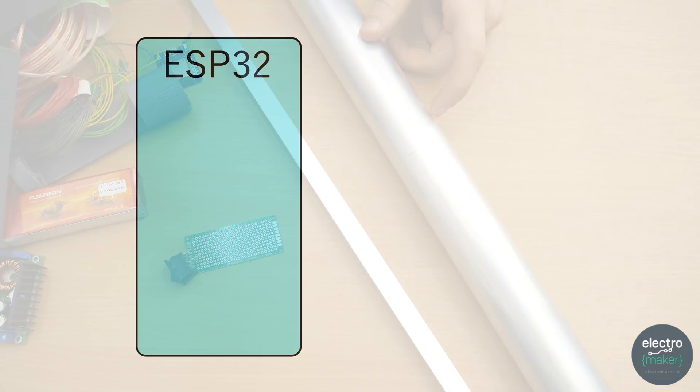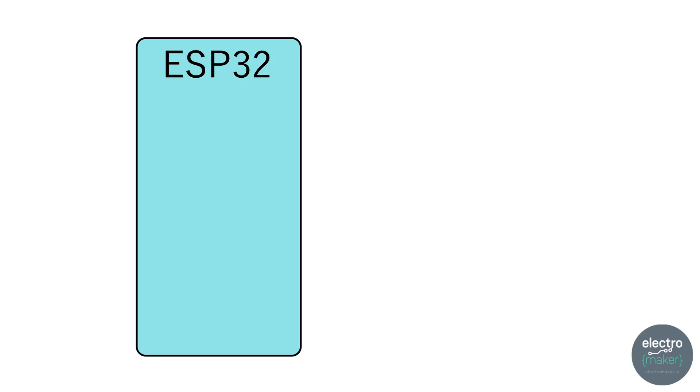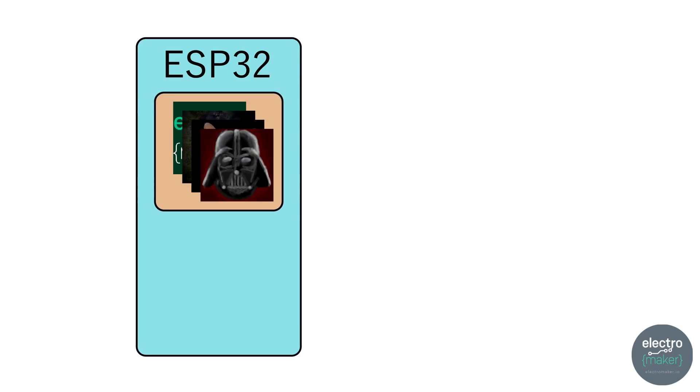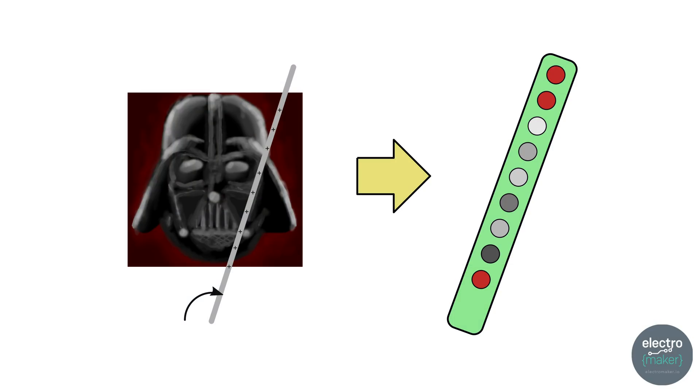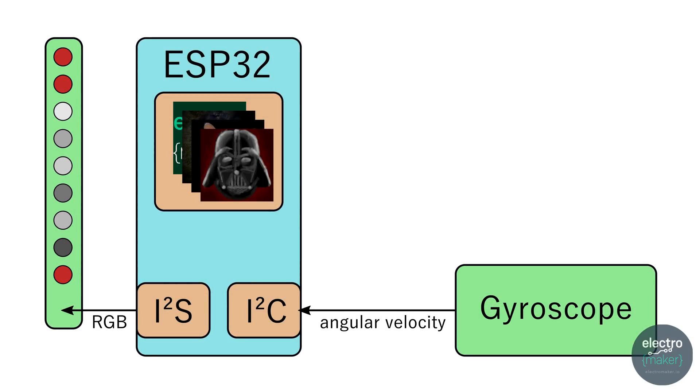And this is how it works. The ESP32 is the microcontroller running the code. It has the images stored as binaries on the internal file system. The ESP reads the angular velocity which is simply the rotation speed and updates the estimated position of the lightsaber. It reads the image pixels of that position from the image and sends them to the NeoPixels.